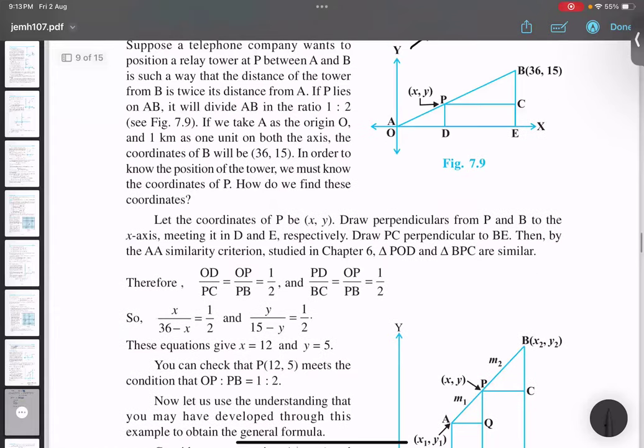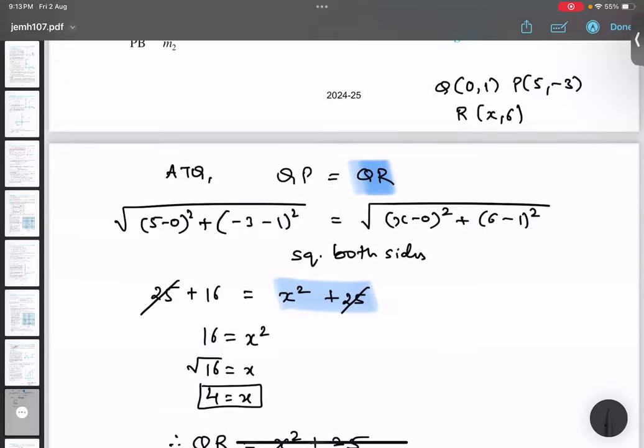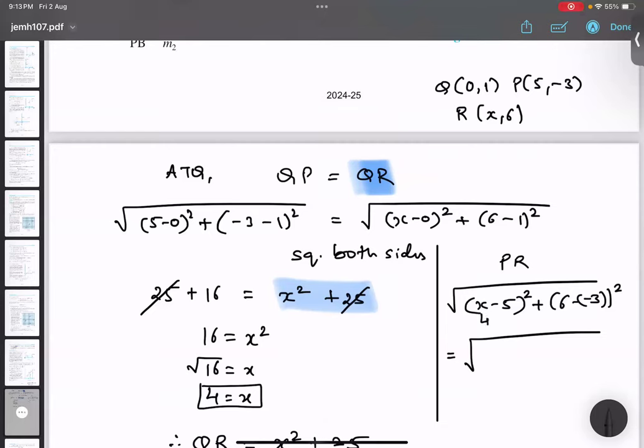And what is the next distance they're asking? PR. So PR we have to calculate. P and R. Let me just do it over here. PR is X minus 5 whole square plus 6 minus minus 3 whole square. So X value is 4. So I'm going to do 4 minus 5. 4 minus 5 is minus 1. Minus 1 square is 1. 6 plus 3 is 9. 9 square is 81. So distance is root 82 units. We can't solve it further. Any doubt in this equation?